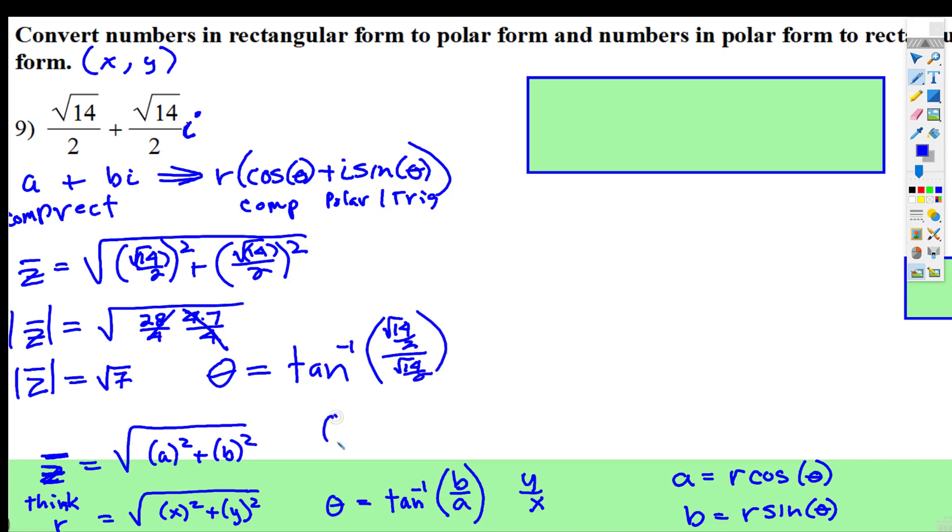We have theta equals inverse tangent of 1. When you plug that into your calculator, you're going to get 45 degrees, and 45 degrees is π/4.